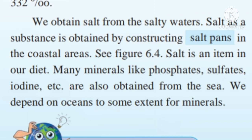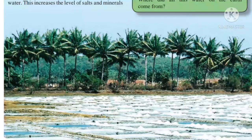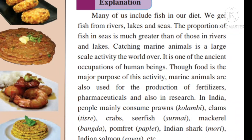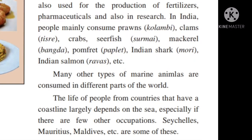We obtain salt from salty waters by constructing salt pans in coastal areas. Salt is used in our daily diet. Many minerals like phosphates, sulfates, iodines, etc. are also obtained from the sea. We depend on the ocean to some extent for minerals. The proportion of fish in the sea is much greater than in rivers and lakes. Catching fish and marine animals is one of the ancient occupations of human beings. Different varieties of fish are included in our daily diet and are also used for production of fertilizers, pharmaceuticals, and other research.